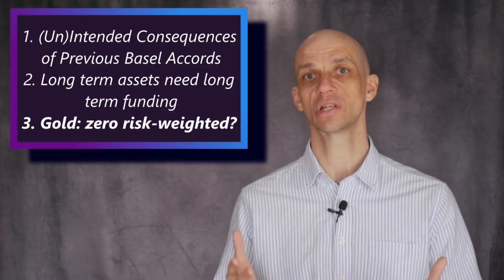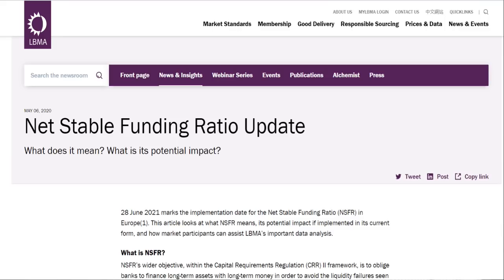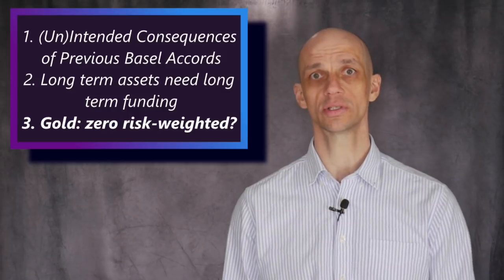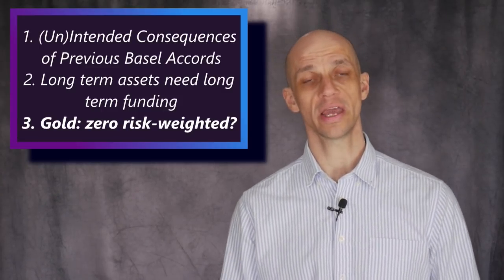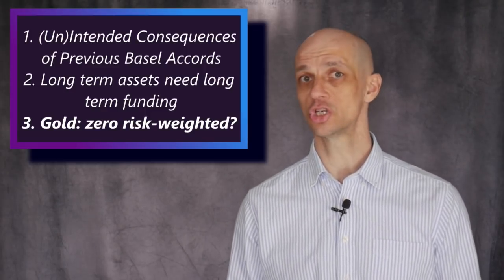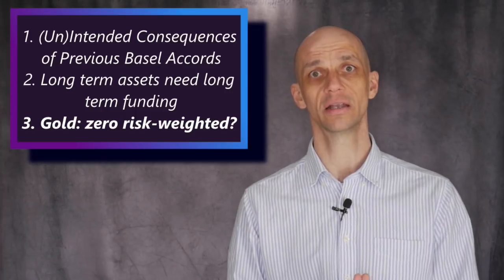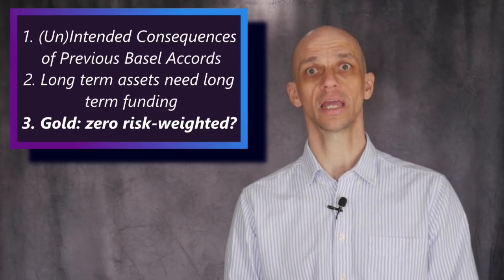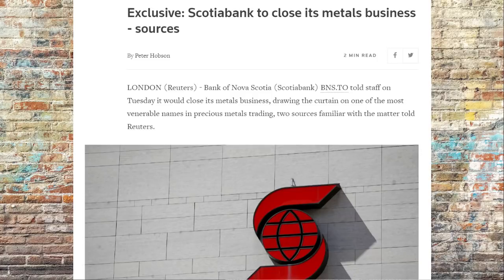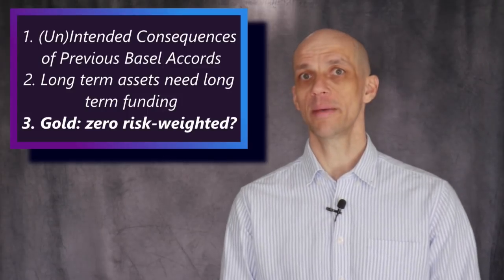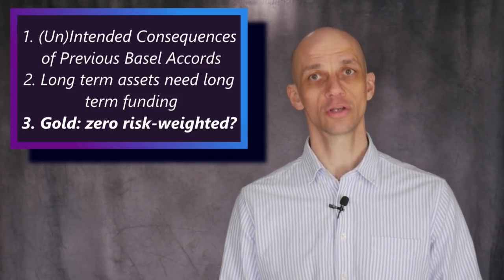This would only offer the bank a return if they were to lease out the allocated metal. The LBMA have been fighting these changes tooth and nail, because most bullion in London is traded and settled on an unallocated account basis, where the customer does not own specific allocated bars and simply has a paper entitlement to metal. The cost to banks of ensuring a required stable funding of 85% for unallocated bullion would significantly increase the cost of doing business. With Scotiabank leaving the sector last year, there is the possibility that other banks may follow, and this may reduce the LBMA's global authority.